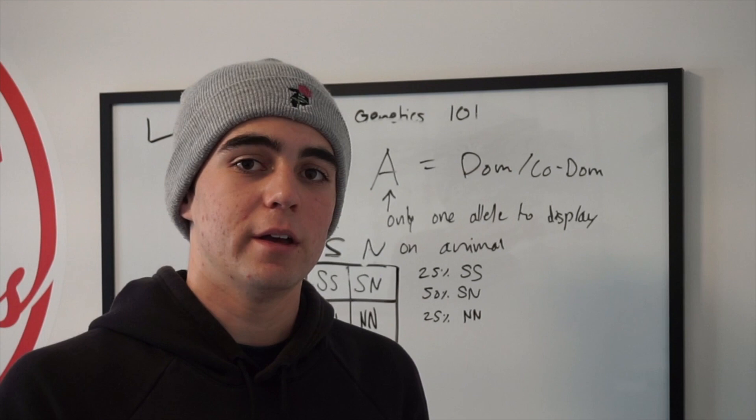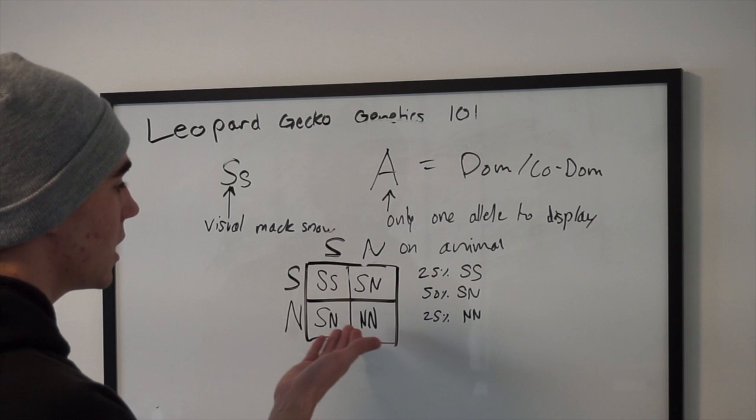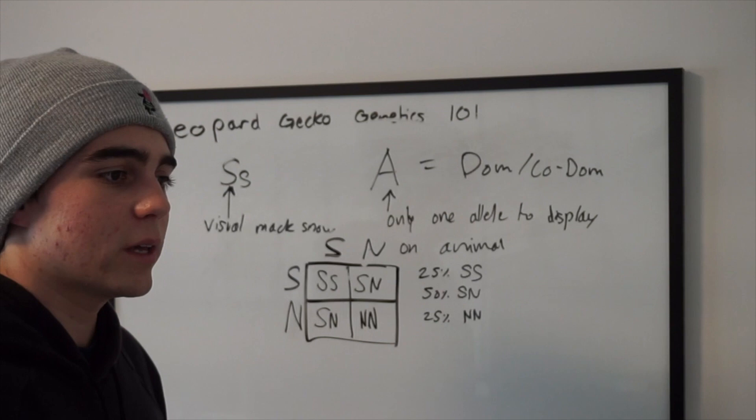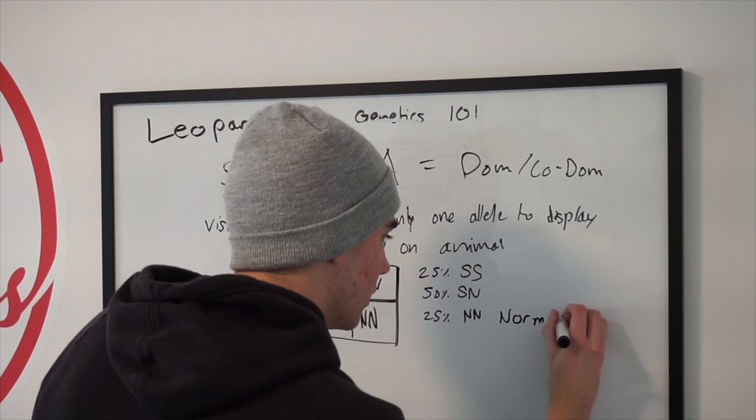The nn outcome just means normal — the animal would display itself as a completely normal gecko, unless it had other recessives from this pairing. But by looking at this, we know it would not have the max snow gene at all. The normal gene is dominant over recessives. If you have one allele that's normal and one that's recessive, the animal won't show the recessive — it'll be heterozygous. So 25% of offspring here would be normal leopard geckos.